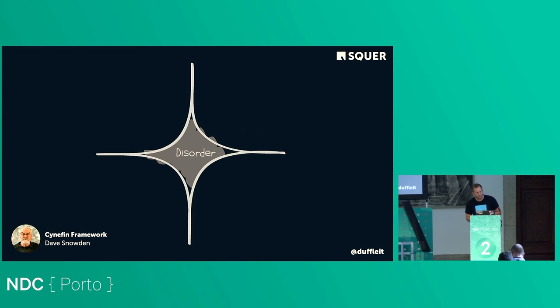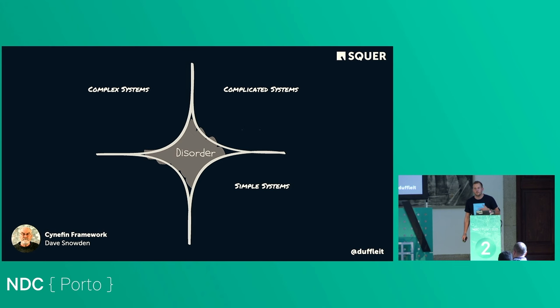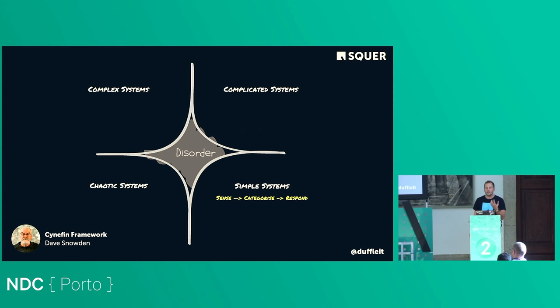I especially like the Cynefin model from Dave Snowden. Where do we make decisions? There are five spaces: disordered, simple, complicated, complex, and chaotic. In a simple system we sense, categorize, and respond — we've seen this before, so we apply best practices. In more complex systems we sense, analyze, and respond — we can't clearly categorize anymore, so we only have good practices.